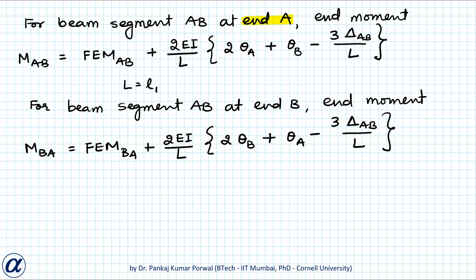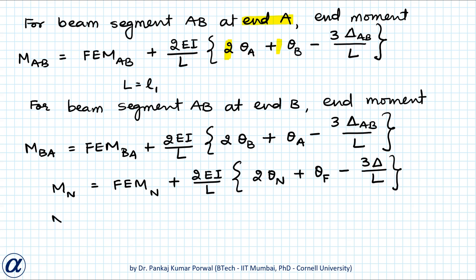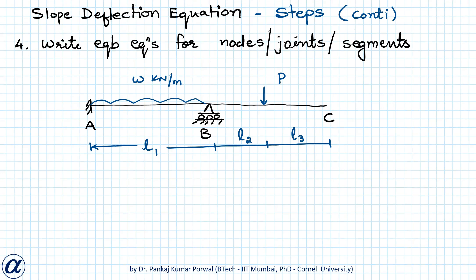Note that for whichever end we are writing the end moment equation, the rotation for that end has coefficient 2 and the rotation for the other end has coefficient 1. In the generic form, N stands for near end and F stands for far end, so the rotation at the near end has coefficient 2 and the rotation at the far end has coefficient 1.